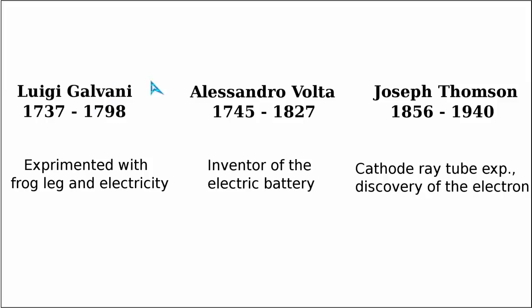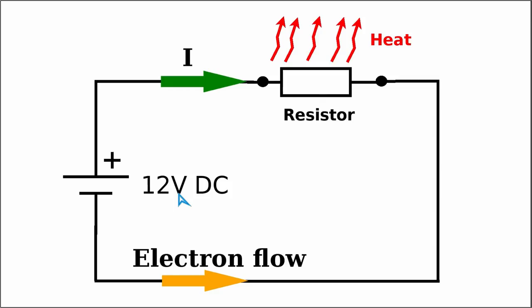In contrast to Galvani, Volta have suggested that there is not necessary to have animal tissue in such an experiment, but he said that instead the muscles from the animal tissues are just simply reacting to electric current. To prove his theory, he have constructed so-called voltaic piles, which were the early versions of an electric battery. As a tribute to Volta, nowadays we measure electric voltage or as it is in physics called potential difference in volts.